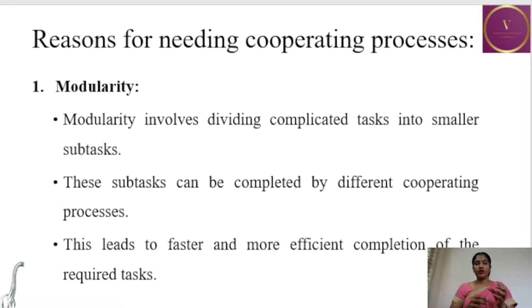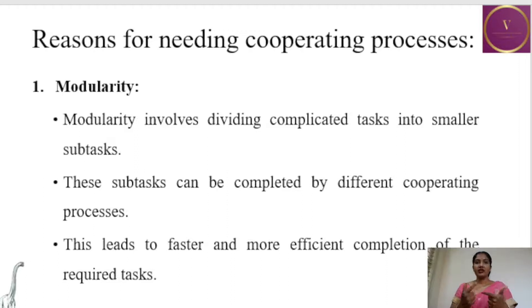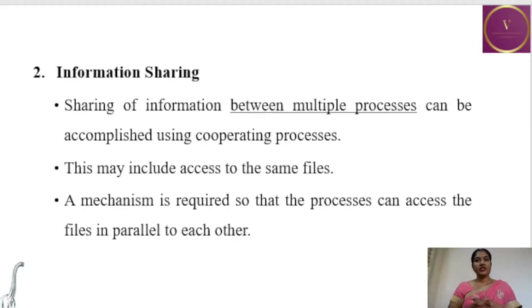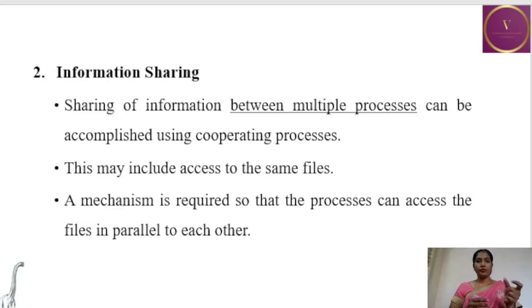Since we are not putting the whole work on a single process, we are dividing the whole work into different subtasks so that each part is done more efficiently. The next reason is information sharing. Sharing of information between multiple processes can be accomplished using cooperating processes — the output produced by one process will be the input for another process.